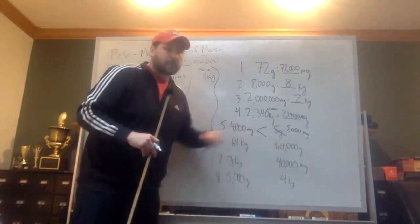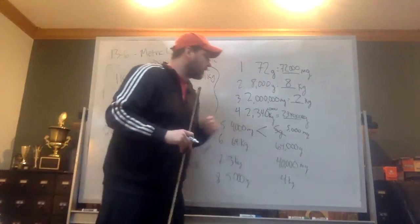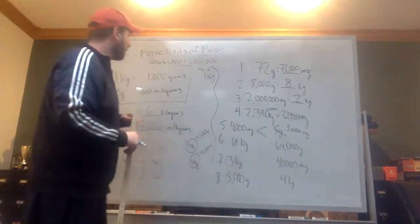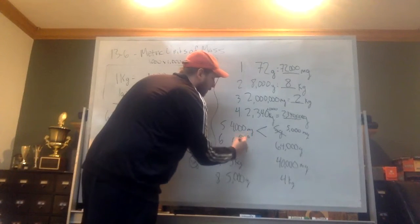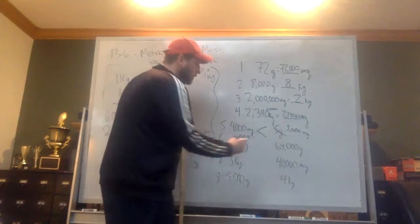Now, we have 64 kilograms, or 64,000 grams. So let's change these kilograms into grams, times 1,000. Now we have 64,000 grams, and 64,000 grams, so that's equal.